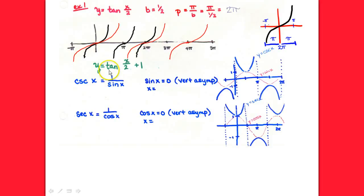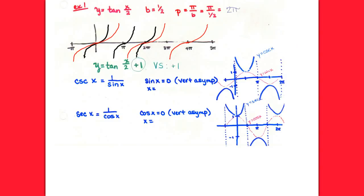After drawing tan(x/2), the next part adds 1, which causes a vertical shift of positive 1. You don't have to go plot 15 points. Just take the red graph you already drew, bump it up one unit, and draw the same thing. The green graph is perfectly fine — it doesn't have to have 15 points on it. All we did was take our red graph, bump it up one unit, and drew the exact same thing.